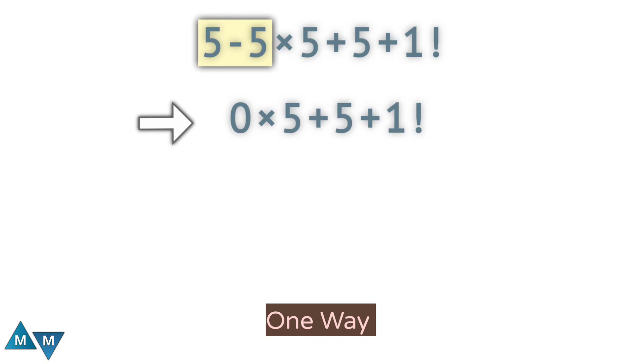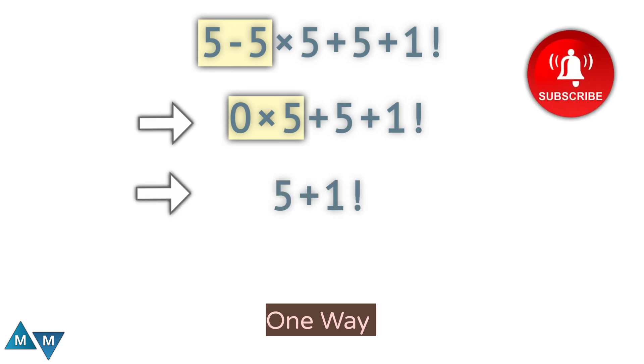Then we'll see in mathematics 0 times 5 gives 0. And it becomes 5 plus 1 factorial, and many people don't even notice this factorial sign and write the expression as 5 plus 1, which equals 6.